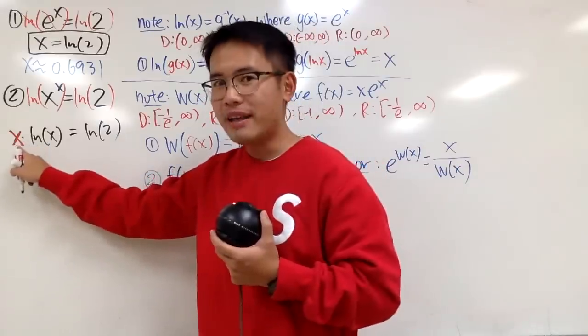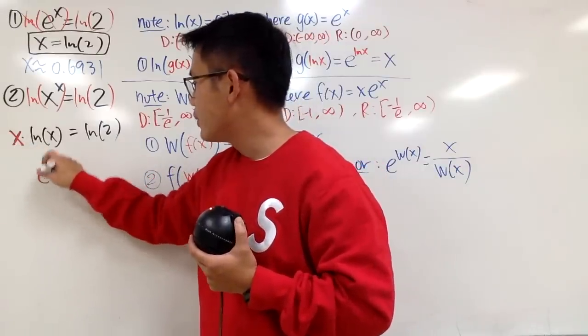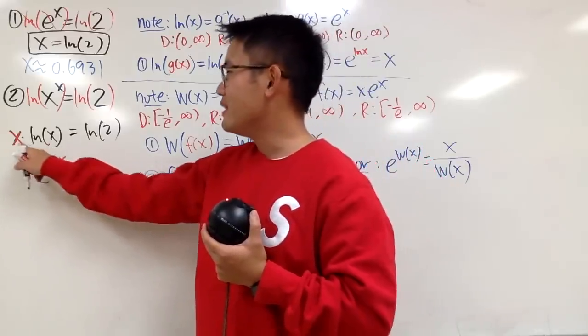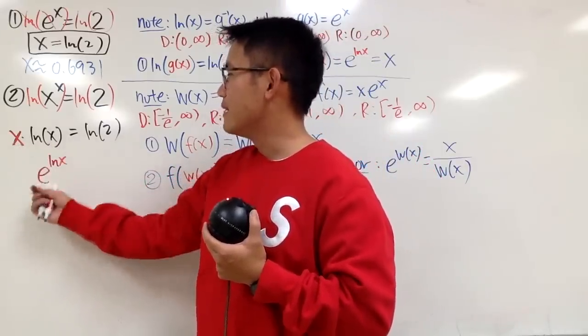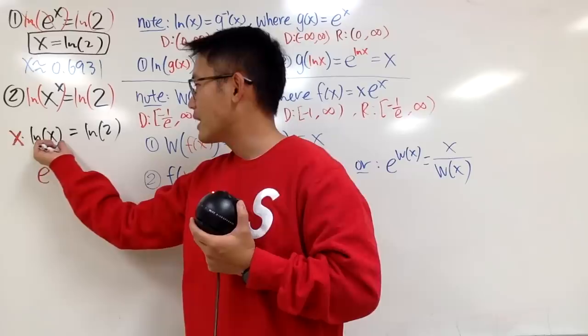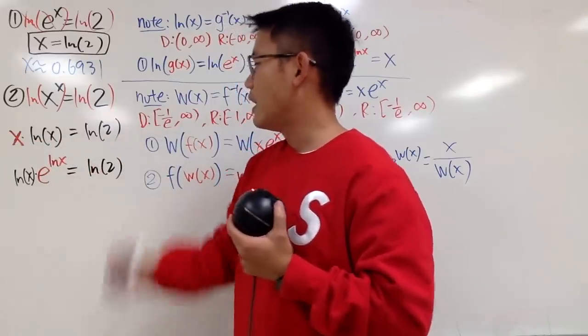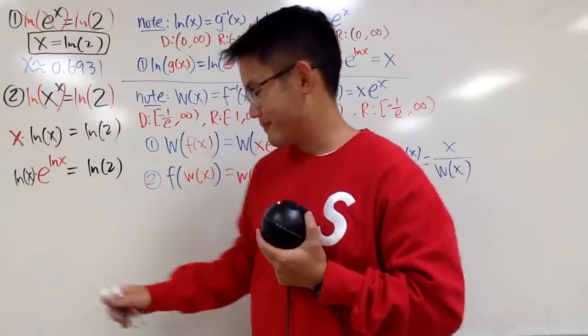So, let me write x as e to the ln x power. And, you see, it was x times ln of x. This is my x. I can put the ln of x in the front. On the right-hand side, we still have ln of 2.